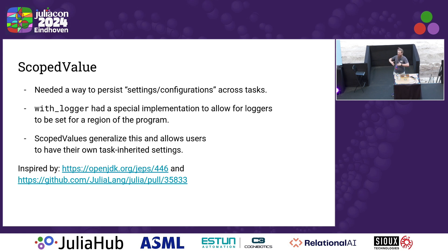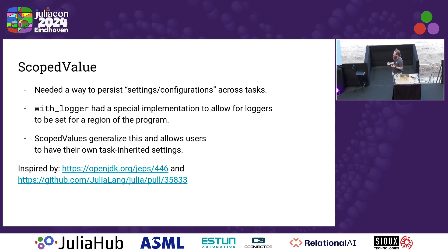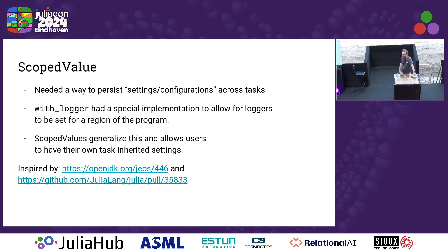Scoped values take this notion of an inherited value, generalize it, and allow users to have it. Funnily enough, it was inspired by me reading an OpenJDK enhancement improvement, which is not normally where I get my good ideas from. I also need to acknowledge prior work on this in Julia: Takafumi Araki proposed context variables, which had a lot of similarities but some key differences.